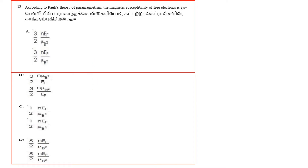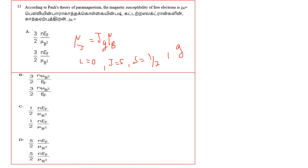For an electron with spin only: L equals 0, J equals S, S equals 1/2, and g equals 2. So the magnetic moment of the electron is mu_electron = g·S·mu_B = 2 × (1/2) × mu_B = 1 mu_B.